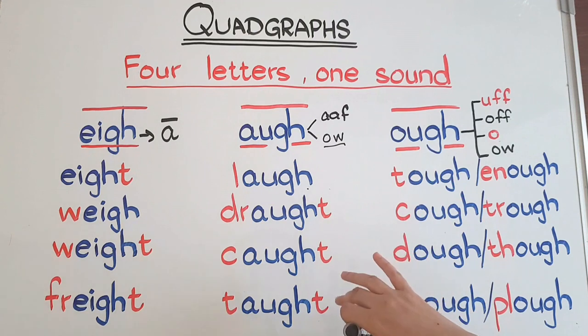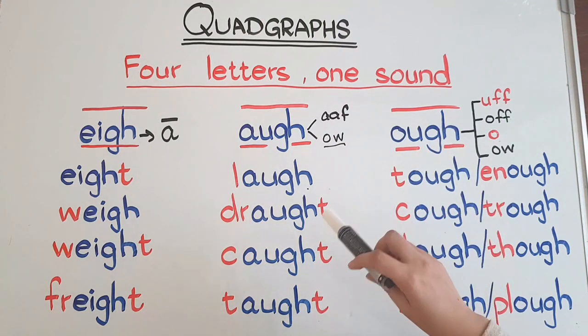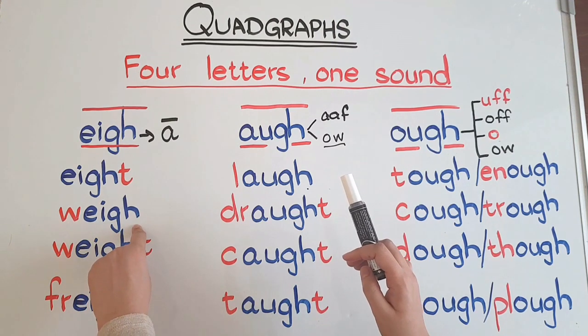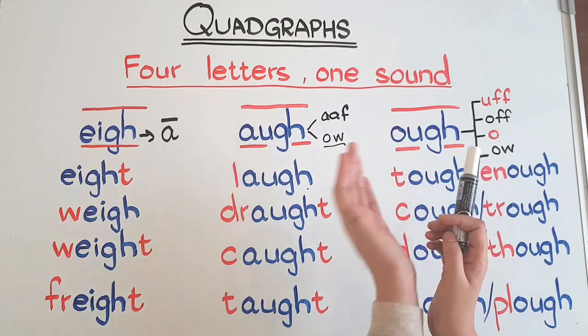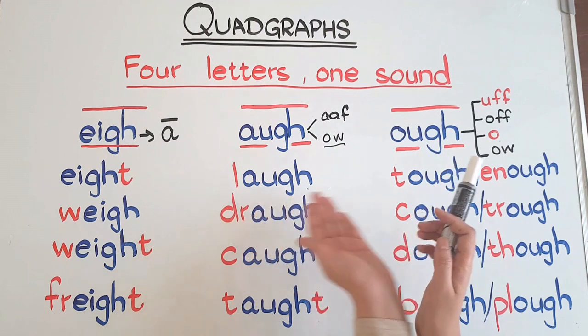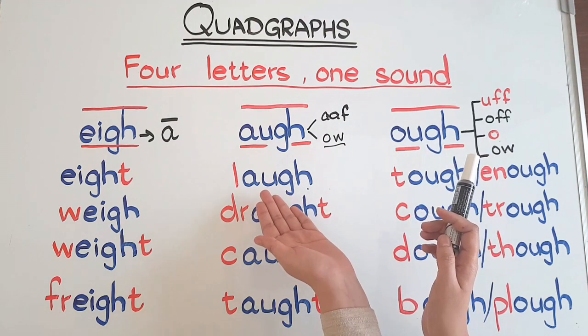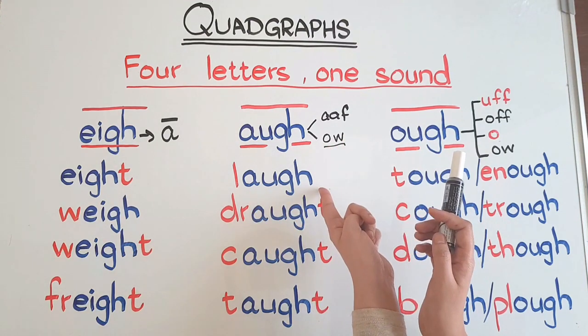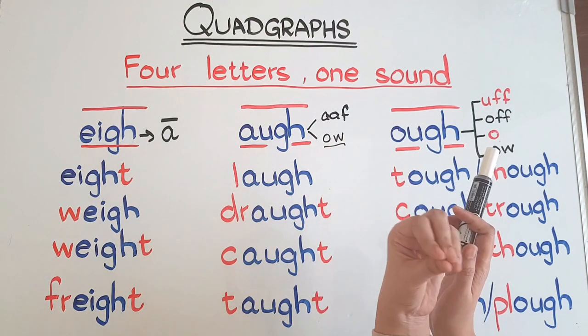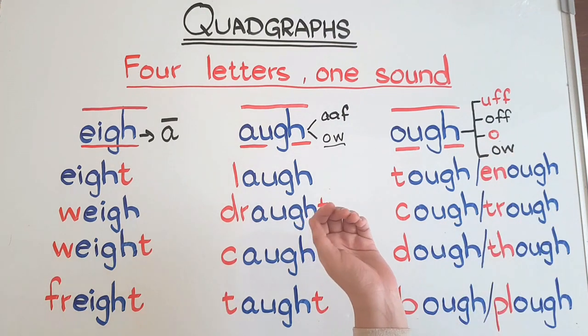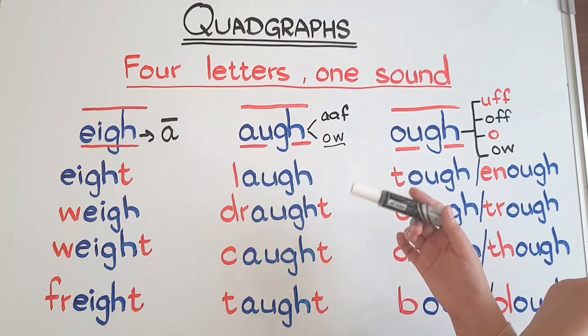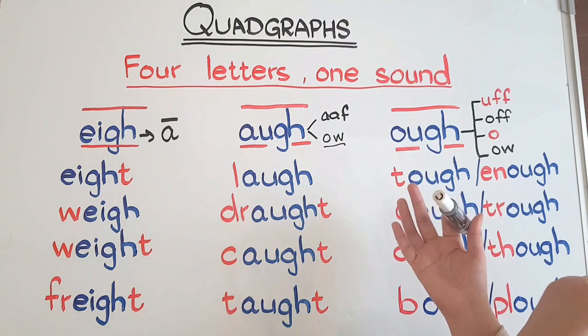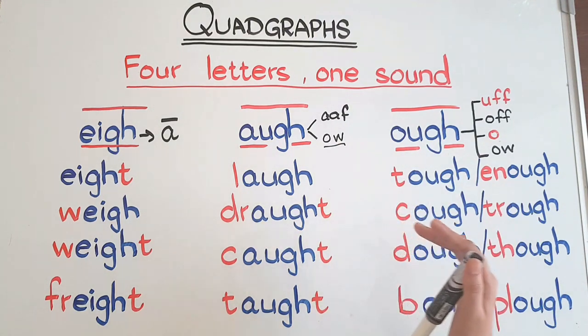You need to memorize these words. If you're giving these words to kids, tell them this is the four-letter 'a' sound. If you're dictating words like laugh, tell them L and the four-letter 'af' sound so they can write this quadgraph. Introduce one pronunciation at a time. Everything comes with time - as they practice more and read more, they will get all these sounds.